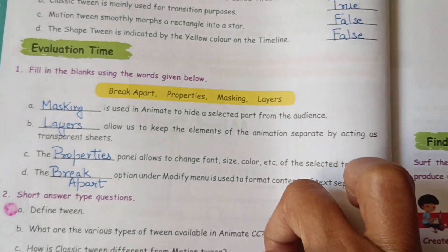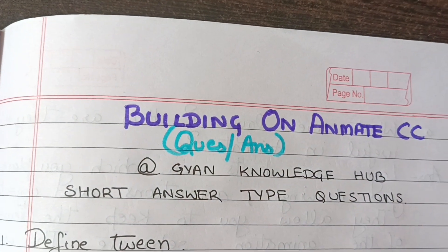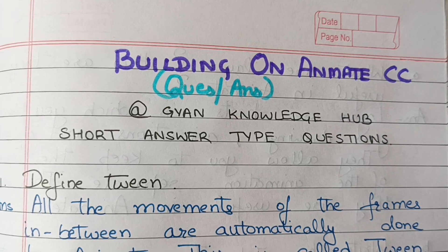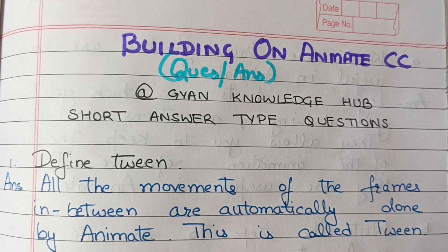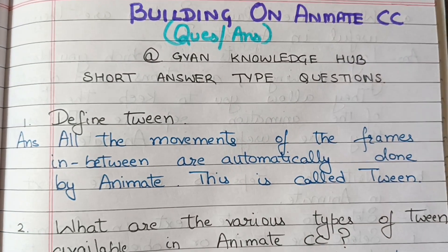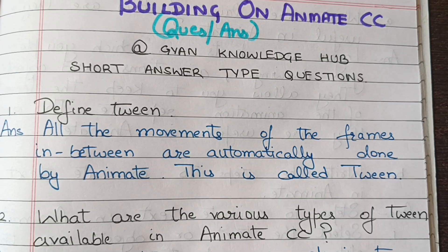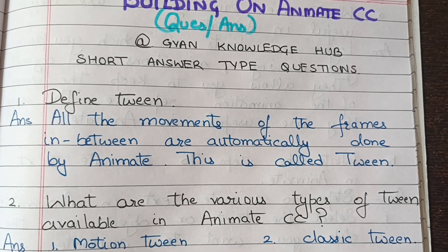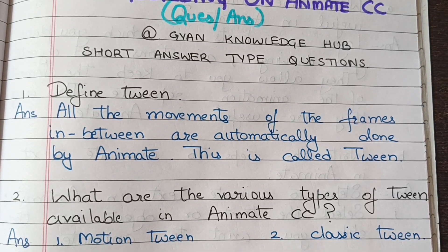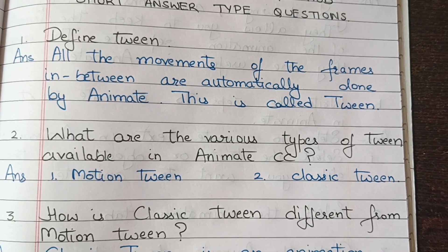Now the short answer type questions. First: define tween. All the movements of the frames in between are automatically done by Animate — this is called tween. Next: what are the various types of tween available in Animate CC? There are two types of tweens available: Motion Tween and Classic Tween.